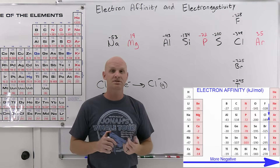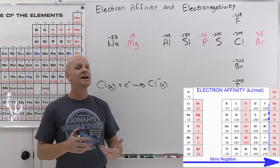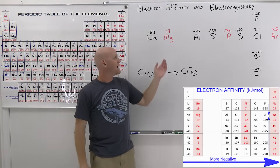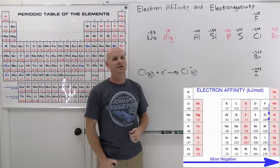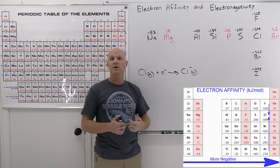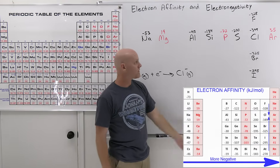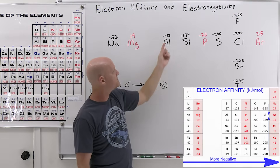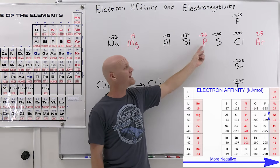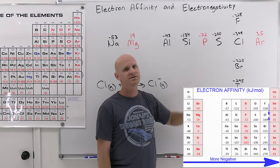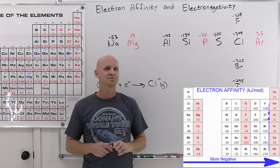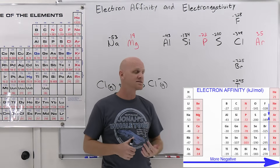The noble gases aren't alone as exceptions. The filled S subshell elements — beryllium, magnesium, calcium, and so on — also tend to have positive or maybe just very slightly negative electron affinity. Magnesium doesn't want an electron either; he's got a filled S subshell and doesn't want to gain that electron in the P orbital. Even the half-filled P subshells violate the trend. Notice we go from negative 43 to negative 134, then skip past phosphorus — it's at negative 72 rather than fitting the trend near negative 200. So the exceptions lie in the same places as for ionization energy: the group 2 metals with a filled S subshell and the half-filled P subshells.